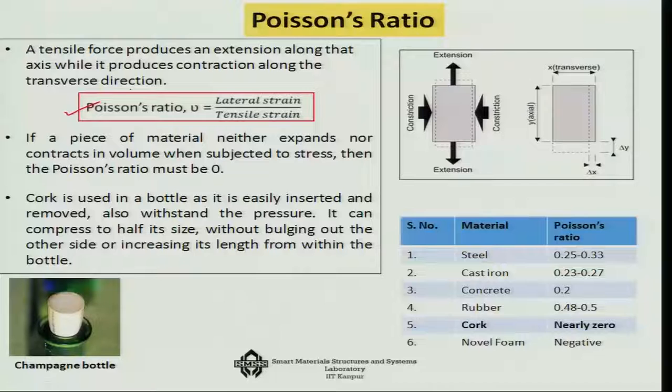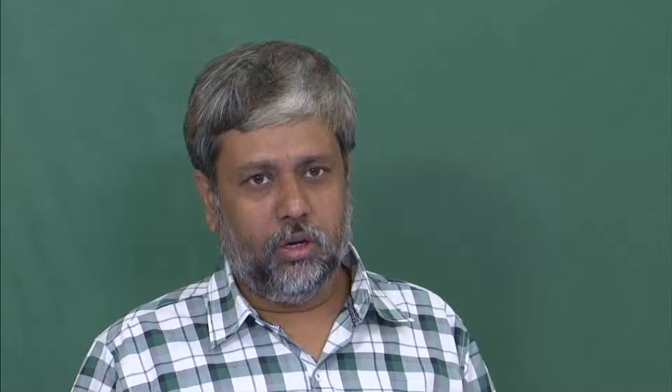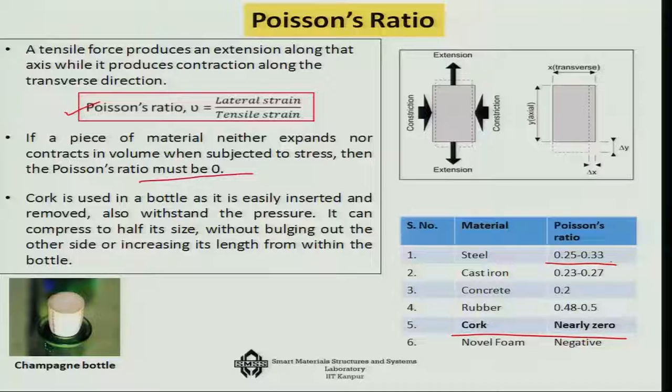This nature of a material is depicted by what we call the Poisson's ratio, which is the ratio of the lateral strain to the tensile strain. Some materials do not exhibit this behavior — for example, a bottle cork generally neither expands nor contracts in the other direction, so cork has a Poisson's ratio close to 0. Most metals have a Poisson's ratio between 0.25 and 0.3. Concrete has a Poisson's ratio of 0.2, and rubber has a Poisson's ratio close to 0.5.